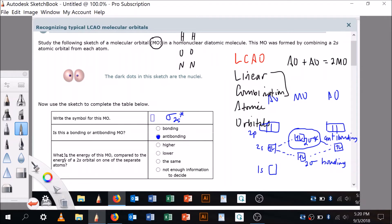It's sigma 2S star, and then the question is, what is the energy of this MO compared to the energy of the 2S orbital on one of the separate atoms? So, here's the separate one, and you see, if this is the antibonding orbital, it's higher. Can you see that? It's higher.